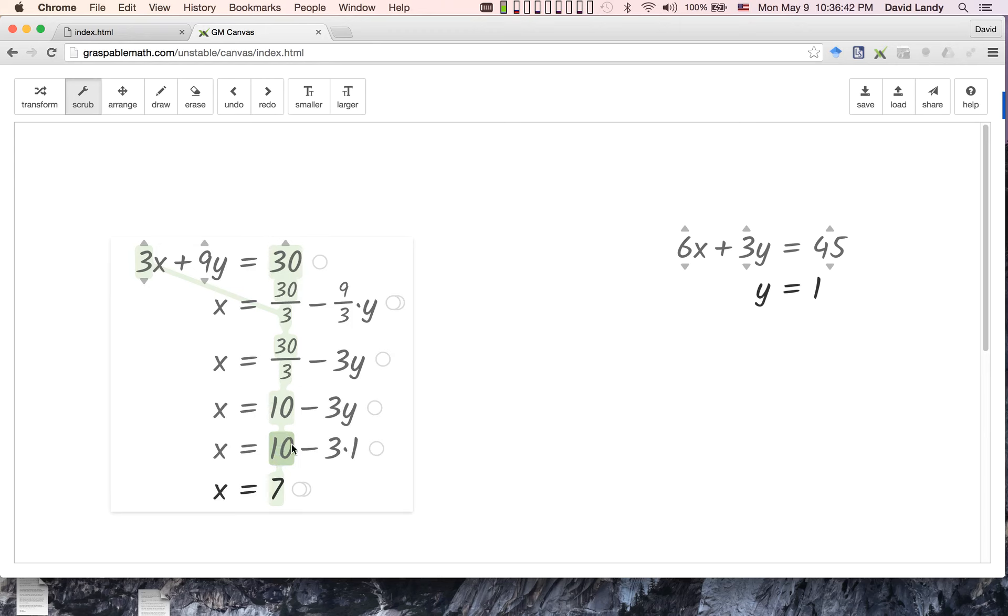I can say, well, what happened to the 9? And there's the 9, right? It turned into that 3, which then got subtracted to get us to the 7.